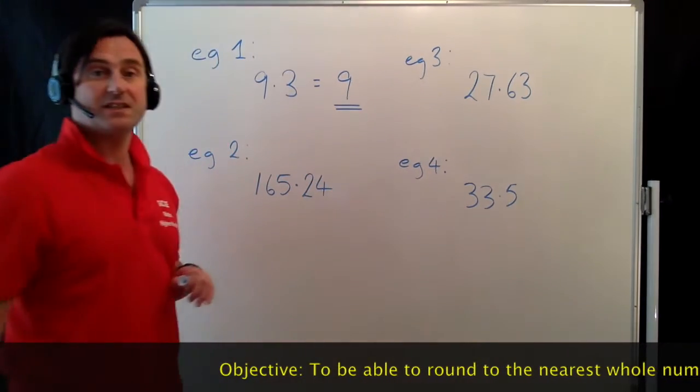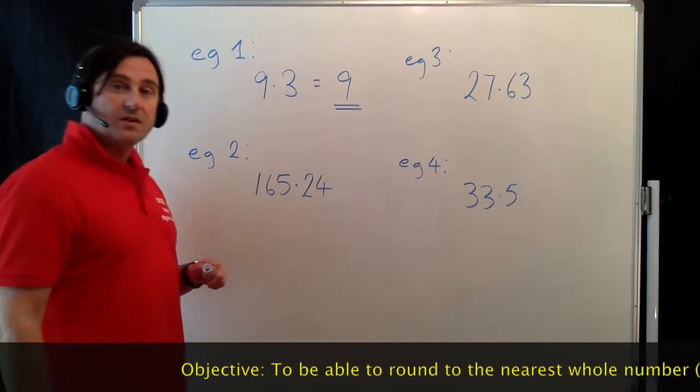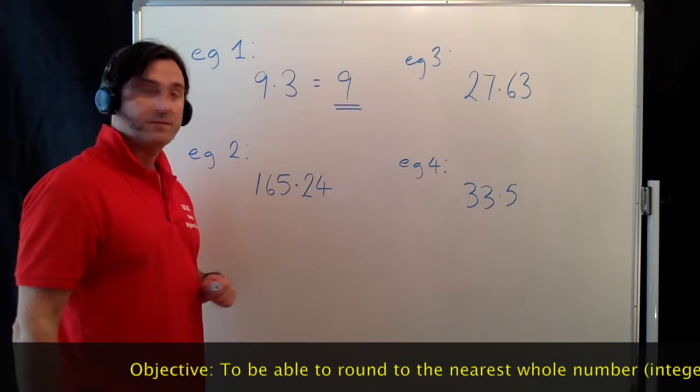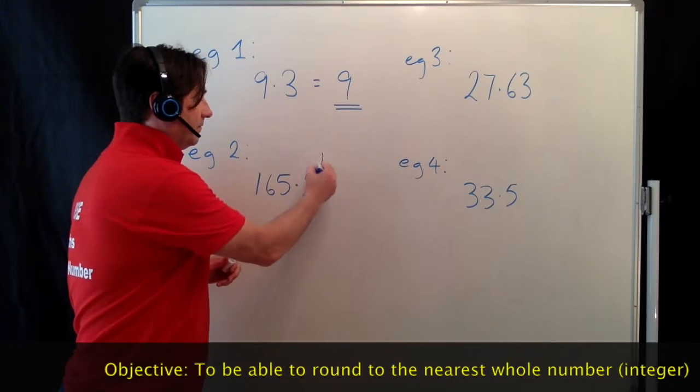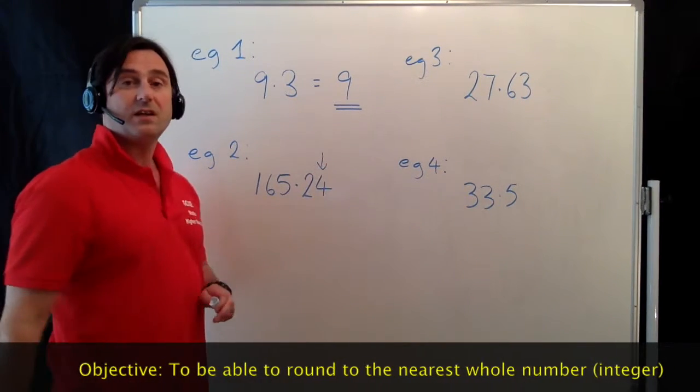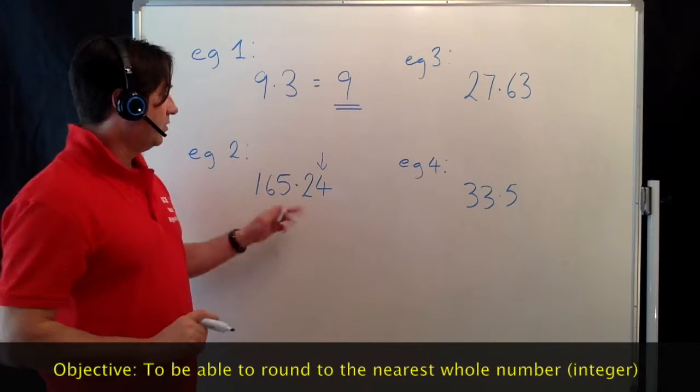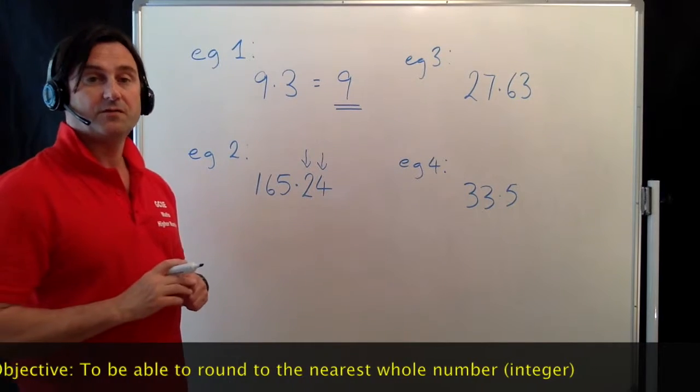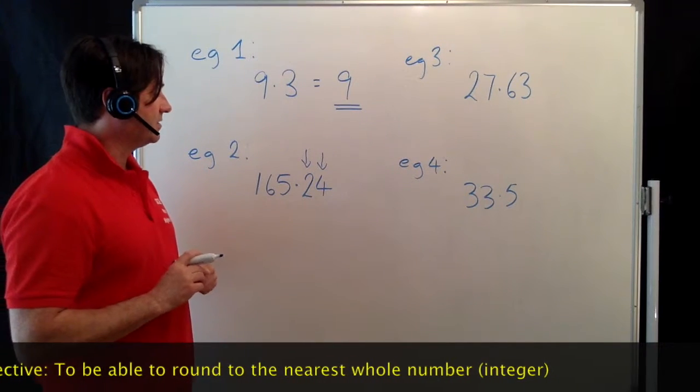Example 2: this time we've got 165.24. The 4 doesn't really come into this at all. All we need to look at is this number here, the first one after the decimal point. Because that's a 2, it's closer to 0 than it is to 10.